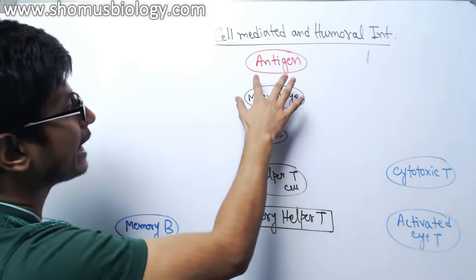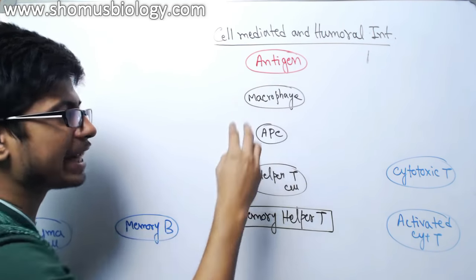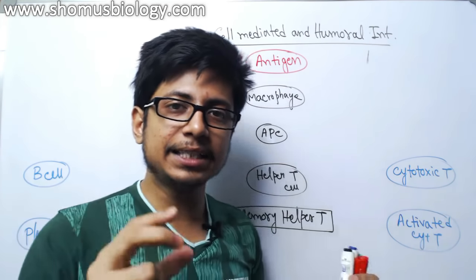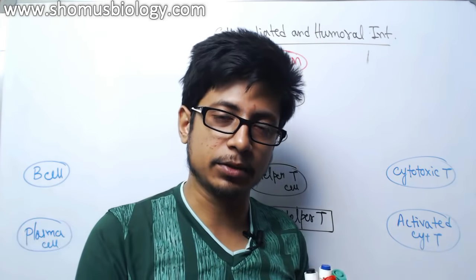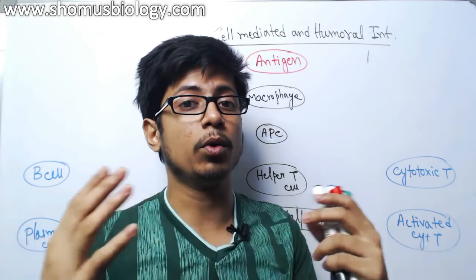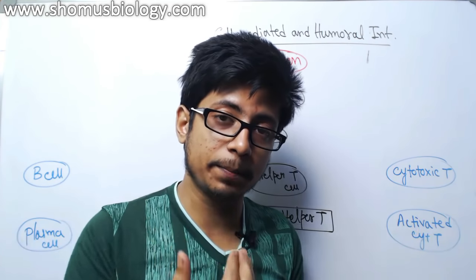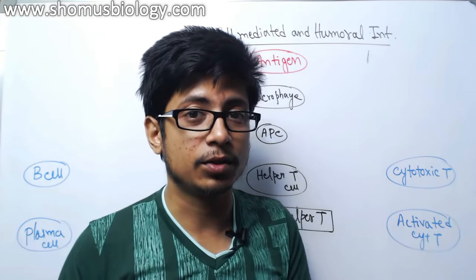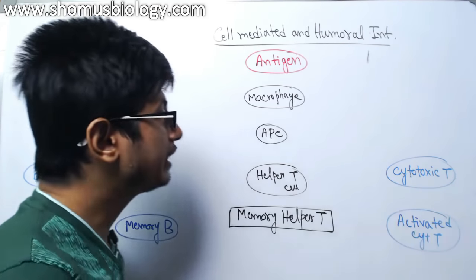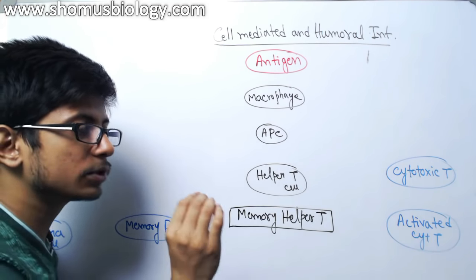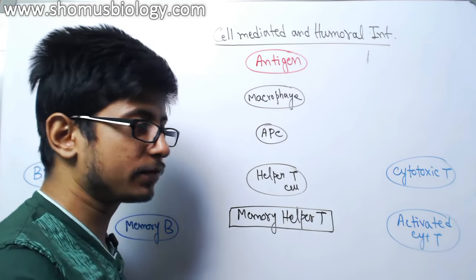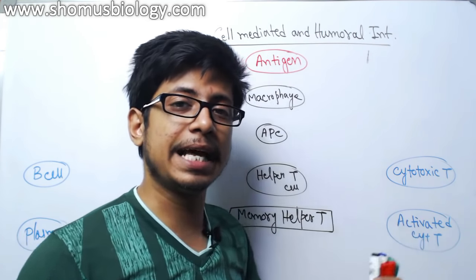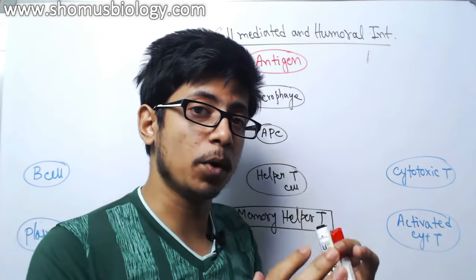It begins with an antigen, which can have different modes of entry. The antigen could be a part of the pathogen, it could be a whole pathogen, or it could be a part of the pathogen that is present inside one of our normal body cells. Depending on which format the antigen is present, we have different sorts of responses.